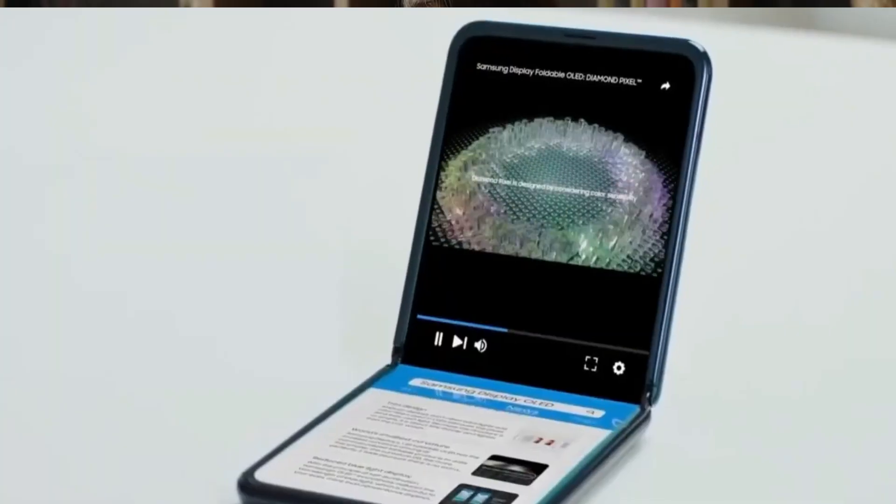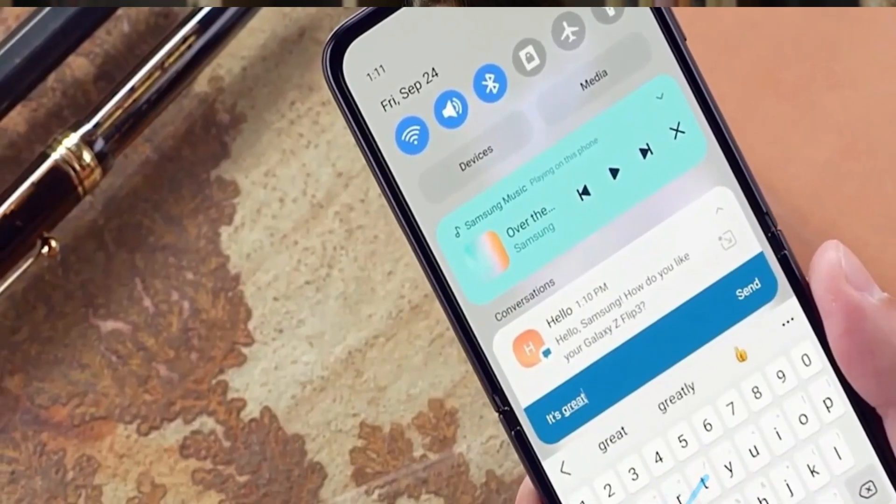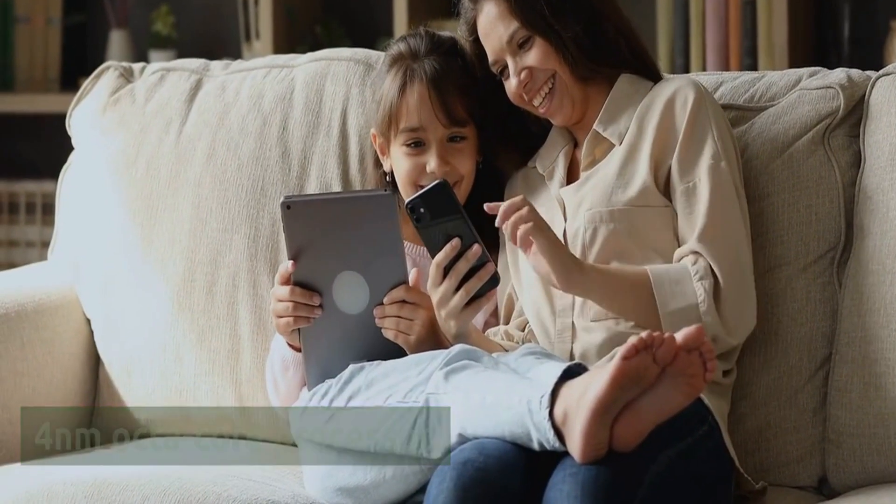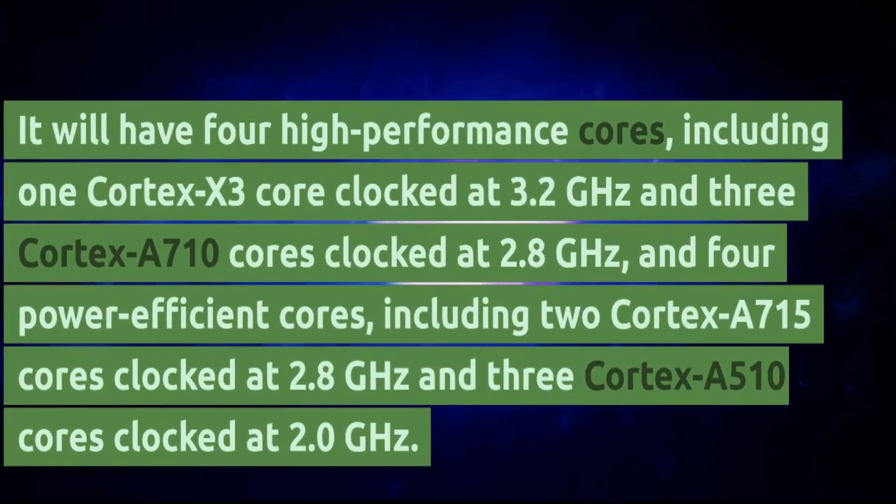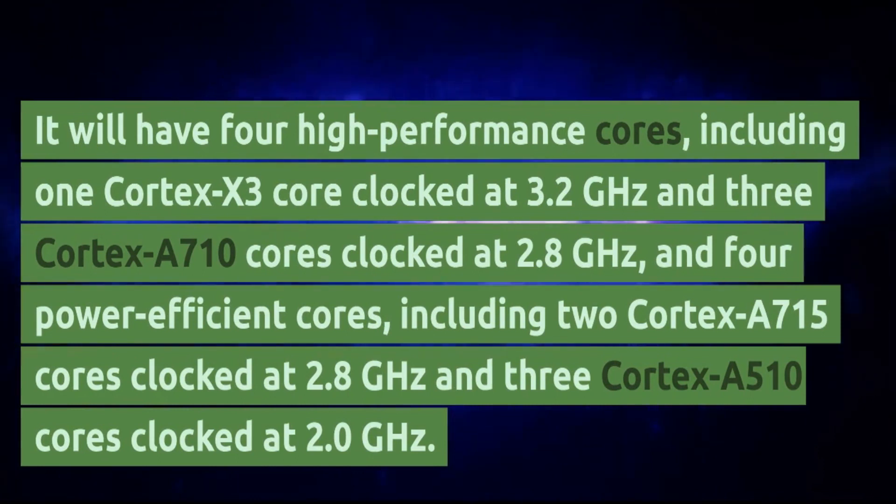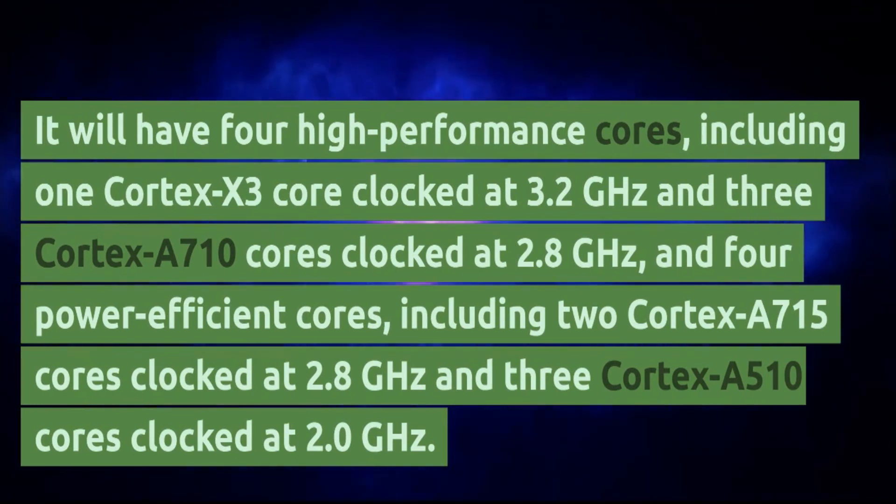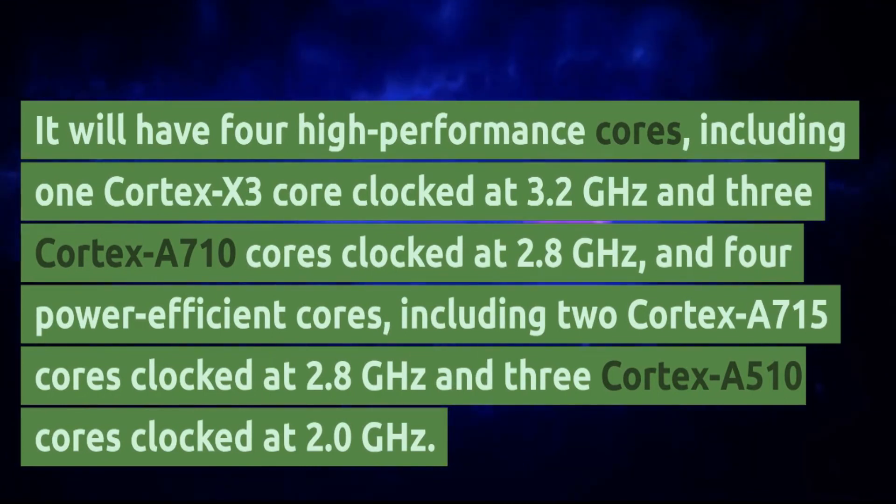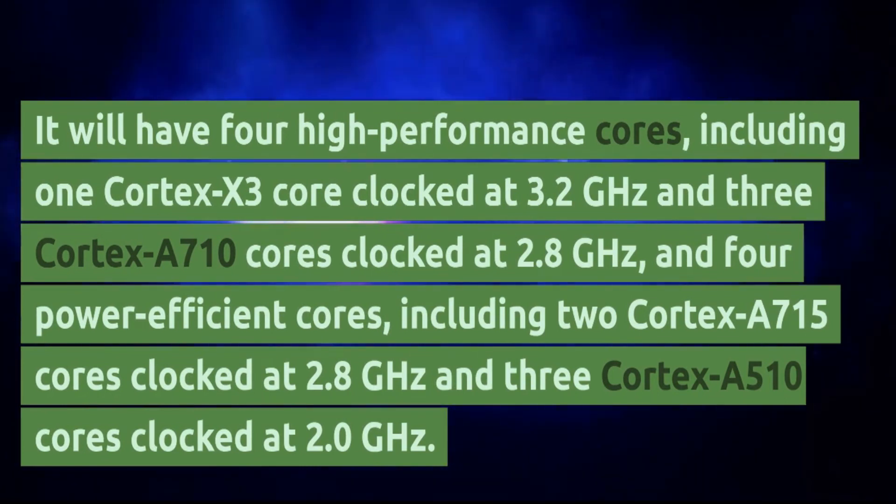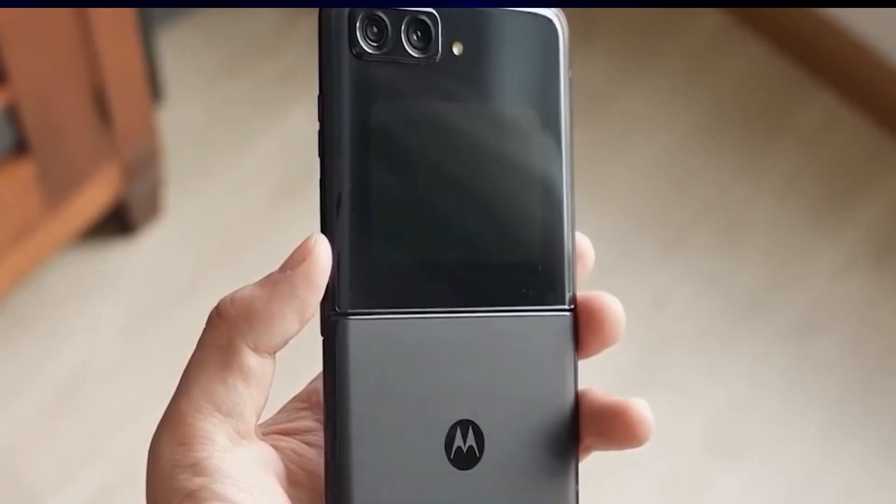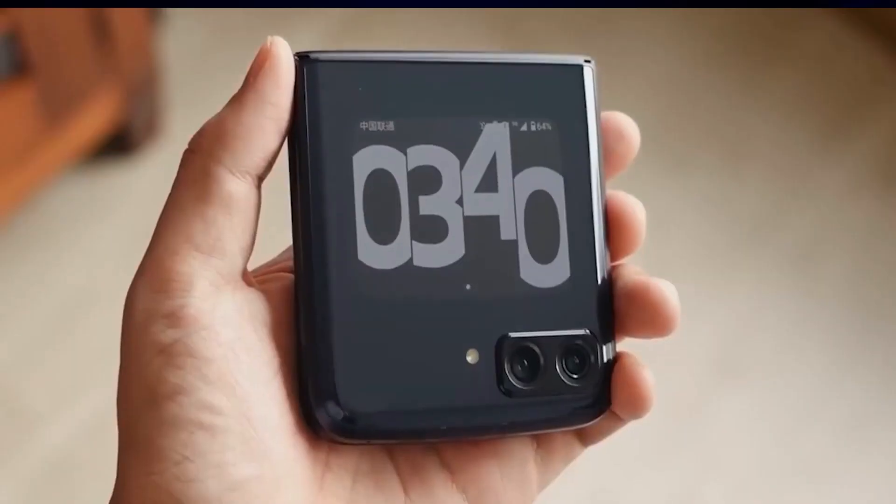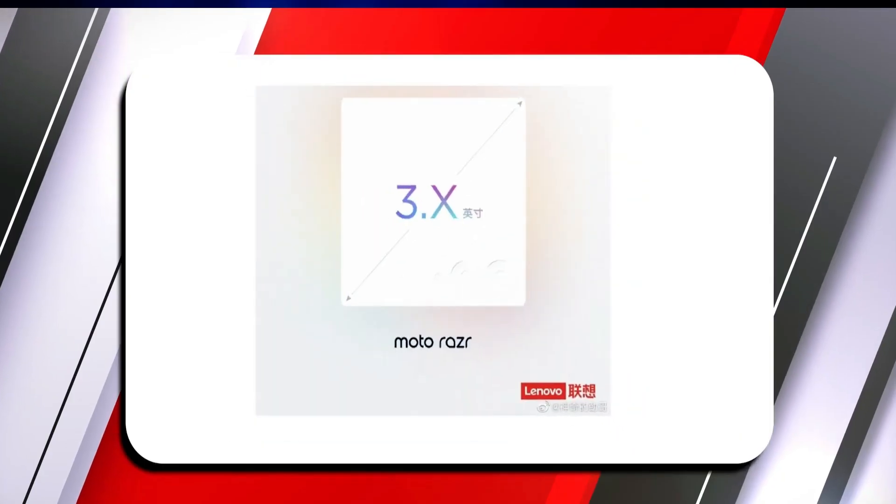Performance. The Motorola RAZR 40 Ultra will be powered by a Qualcomm Snapdragon 8 Gen 2 chipset, which is a 4nm octa-core processor. It will have four high-performance cores, including one Cortex-X3 core clocked at 3.2 GHz and three Cortex-A710 cores clocked at 2.8 GHz, and four power-efficient cores, including two Cortex-A715 cores clocked at 2.8 GHz and three Cortex-A510 cores clocked at 2.0 GHz.